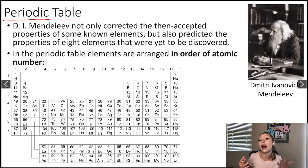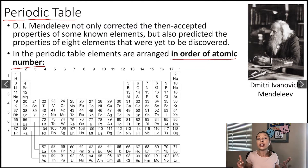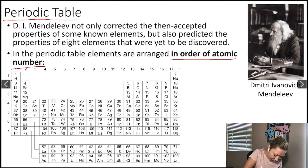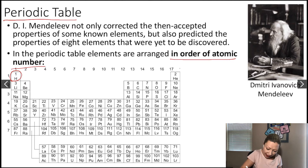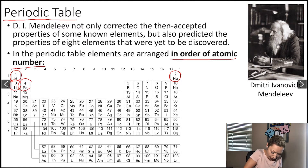So what is in the periodic table? In the periodic table, the elements are arranged in order of atomic number. Remember that the atomic number is the number of protons in an element. If we look at this table here, we can see that hydrogen is the first element and contains one proton, helium contains two protons, lithium contains three protons, and beryllium contains four protons.